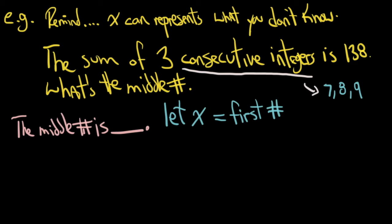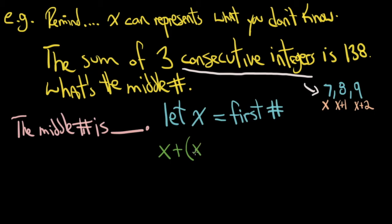For consecutive number problems you always get the same sort of equations. If x is the first number, then what we have is the first number plus the second number plus the third number equals 138. So that's x + (x+1) + (x+2) = 138. The word 'is' means equals.